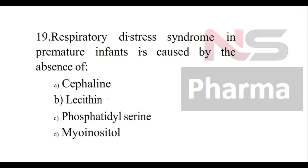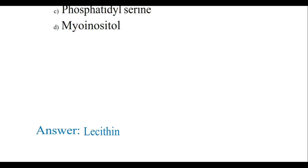Question number nineteen: Respiratory distress syndrome in premature infants is caused by the absence of — Option A: Cephalin, Option B: Lecithin, Option C: Phosphatidylserine, Option D: Myoinositol. The answer is lecithin.